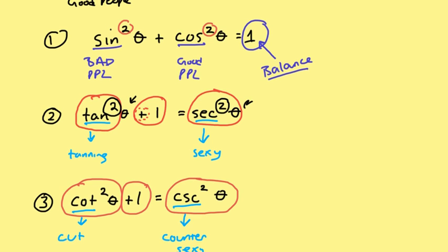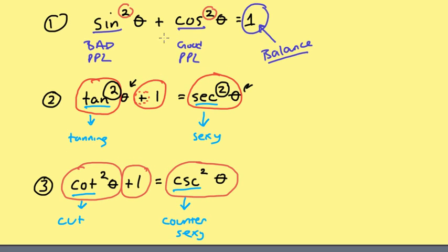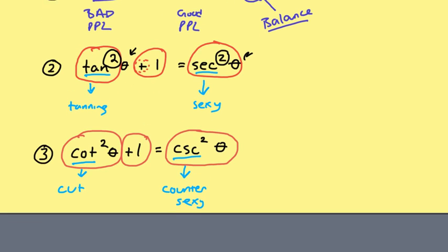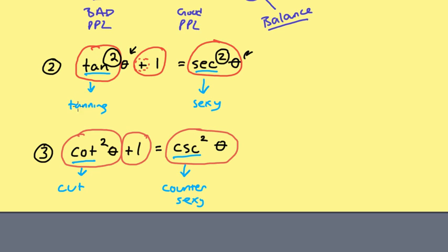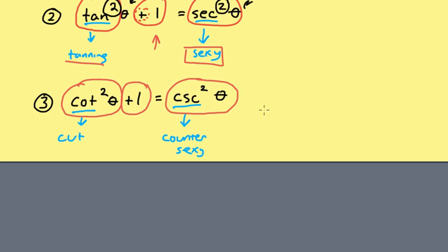Let's go ahead and quickly recap. Sine are bad people, cosine are good people—add them together and you make one face of humanity, that's the first identity. Second identity: people who tan at least once in the summer are gonna look sexy for the whole entire season. And third and last one: cot means cut, and people who cut themselves at least once on purpose are considered counter sexy or not sexy.